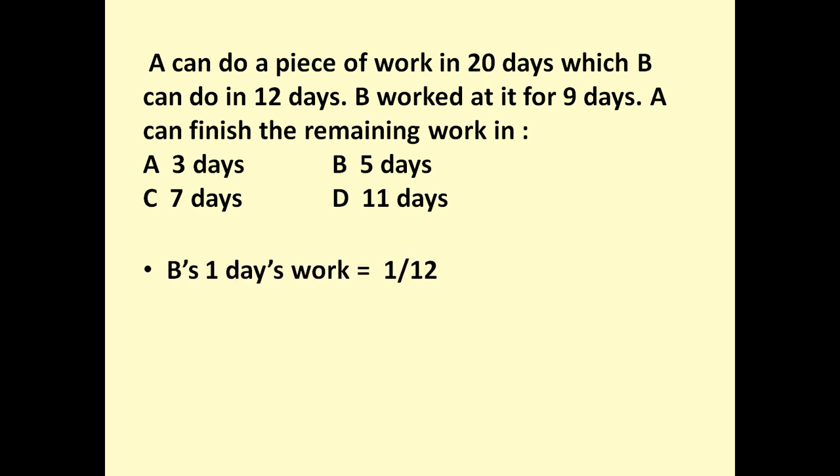So first, B's 1 day work is equal to 1/12 because B can finish the work in 12 days. B's 9 day work, because B worked only for 9 days, so in 9 days how much work he has completed? 9 × 1/12 because 1/12 is his 1 day's work. 9 days means 9 × 1/12 = 3/4. So in 9 days B will finish 3/4 of the work.